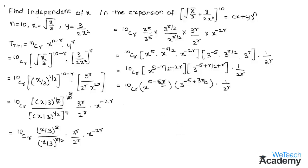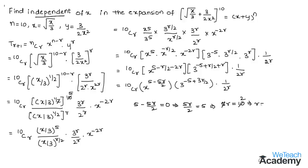Since we have to find the independent term, let us equate the power of x to 0. We have 5 − 5r/2 = 0. Transposing: 5r/2 = 5, so cross-multiplying gives 5r = 10. Simplifying, we get r = 2.